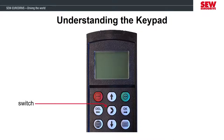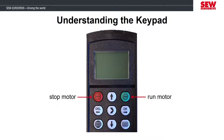The switch key is helpful when you're in the parameter tree and don't want to make a change — you can press this key to move the cursor out of editing back to just viewing the parameter. If you feel comfortable and it's safe to operate the motor using the keypad, the stop and start keys are what you would use in manual mode to control the motor. Now that we've described the purpose of these buttons, let's head to our MobiDrive and demonstrate how to use some features of the keypad.